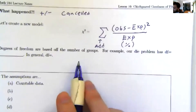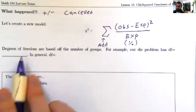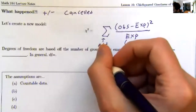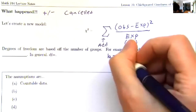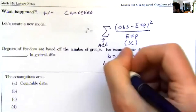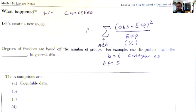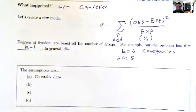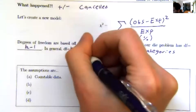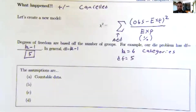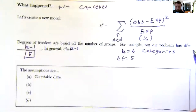Just like our previous t-distribution, the chi-squared distribution has degrees of freedom as well. If I have k equals 6 categories, then my degree of freedom is 5. So much like the t-distribution, my degrees of freedom here are k minus 1, which for our dice gives 5.